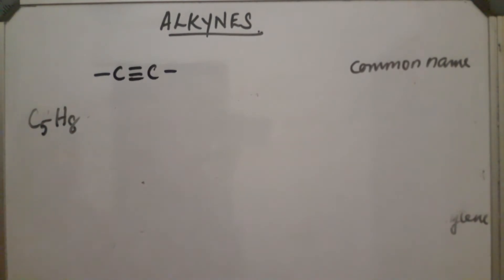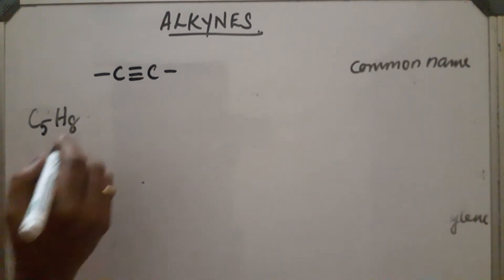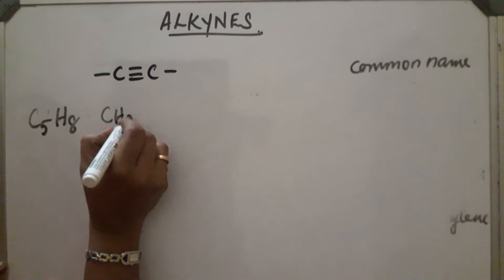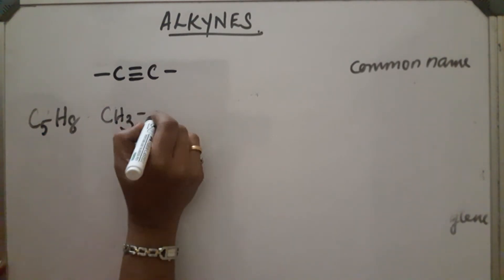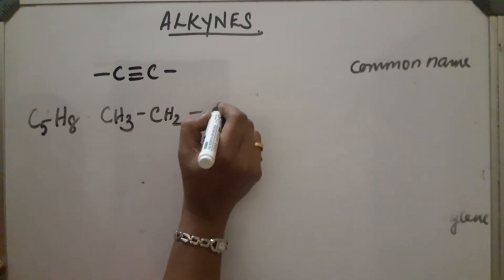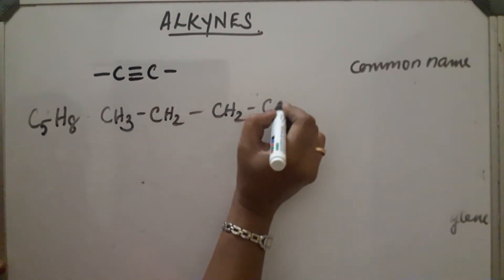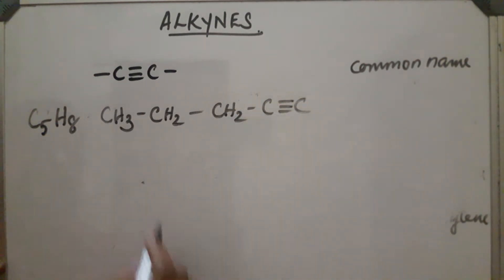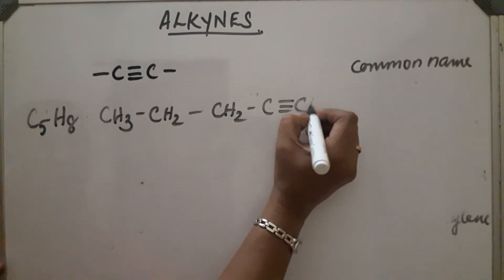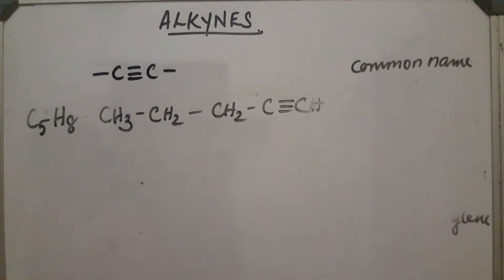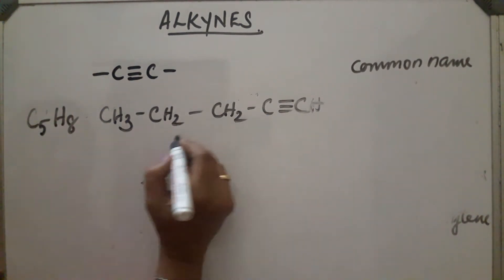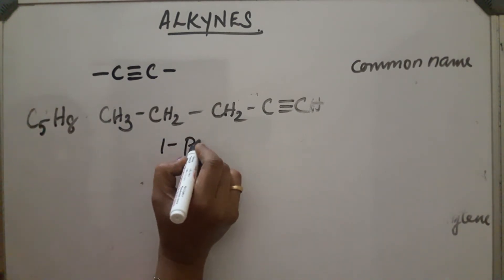Since it shows two types of chains, alkyne shows chain isomerism. The straight-chain structure is CH₃–CH₂–CH₂–C≡CH, which is called 1-pentyne.